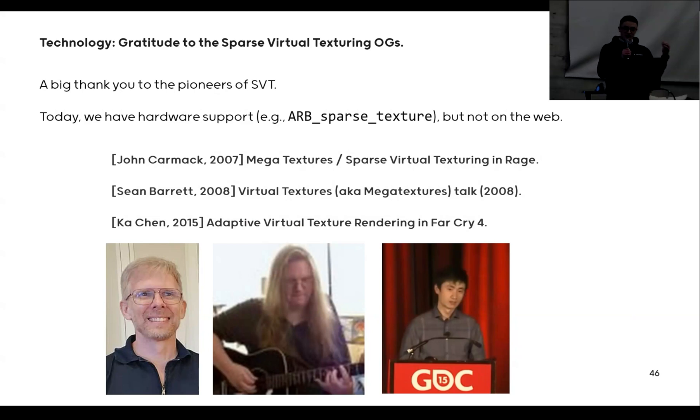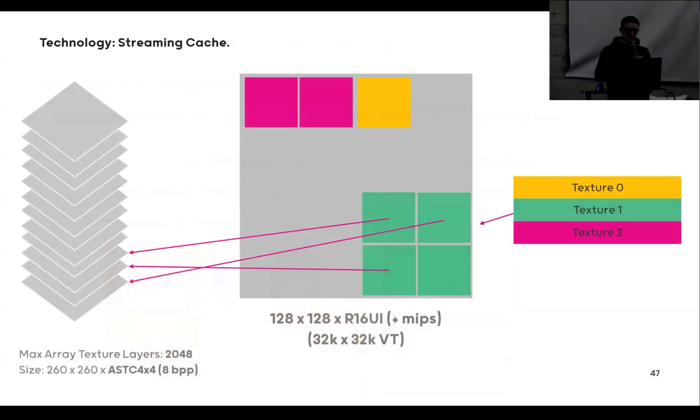At this point, I want to give a shout out to the OGs of sparse virtual texturing. As far as I know, John Carmack was the first guy to implement that in Rage, and Sean Barrett did an amazing talk on YouTube that allowed me to understand what was going on. And then Kachin did another amazing talk at GDC for adaptive virtual texture streaming in Far Cry with Ubisoft. So thanks, guys. Couldn't have done it without you.